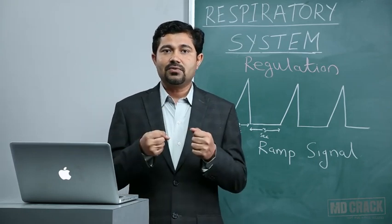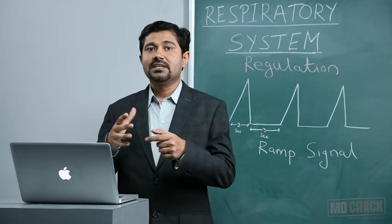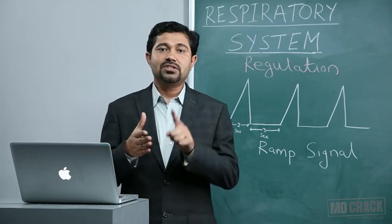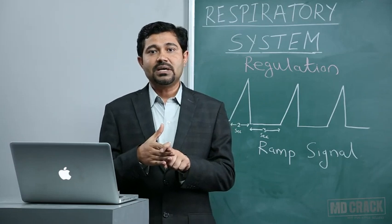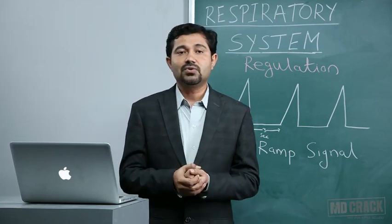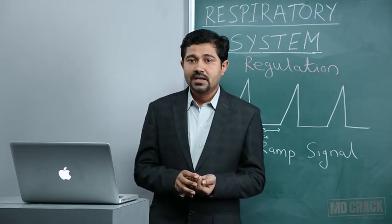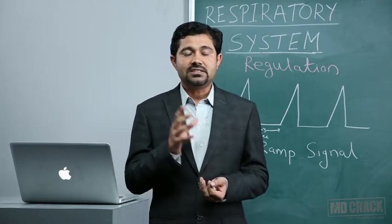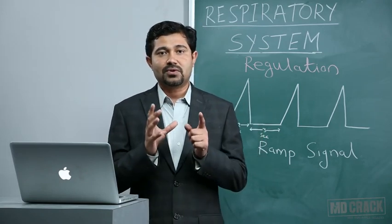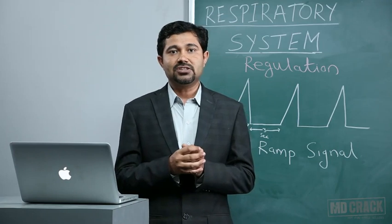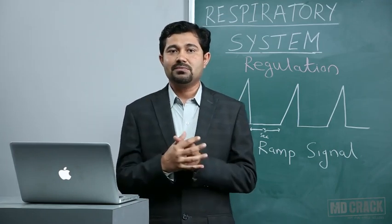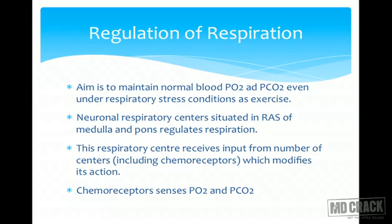The body is making all the effort so that respiration can be maintained, so that the partial pressure of CO2 and oxygen does not change in the blood and tissues. The respiratory centers, as with the other vital centers, are located in the pons and medulla — the group of neurons which mainly regulate your respiration are situated in the reticular activating system of the pons and medulla. These respiratory centers in turn receive input from many other centers and act on the feedback information received, the main input being from the chemoreceptors.